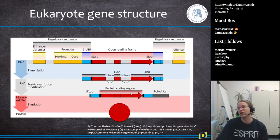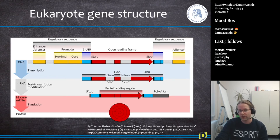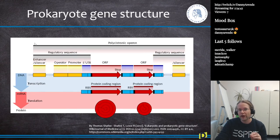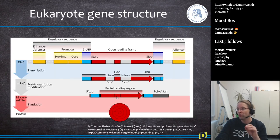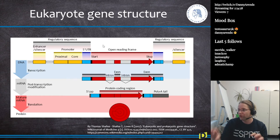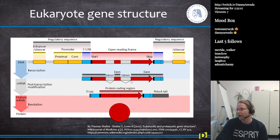We will discuss post-transcriptional modification in more detail in the next lecture when we cover RNA and messenger RNA. The key difference between prokaryotes and eukaryotes is that prokaryotes tend to code multiple proteins on the same messenger RNA, while eukaryotes almost always have one protein per mRNA, but can modify a single mRNA via alternative splicing to encode different protein variants. The intron-exon structure is unique to multicellular eukaryotes.